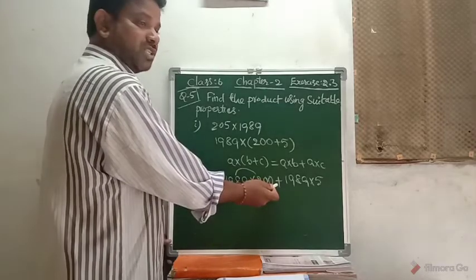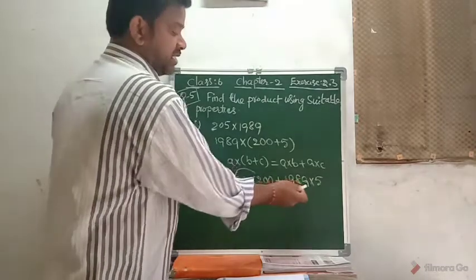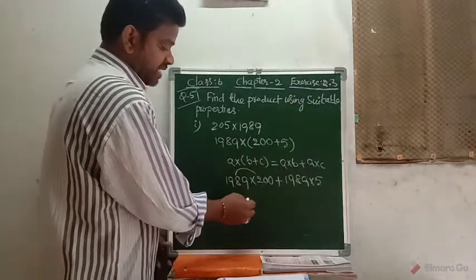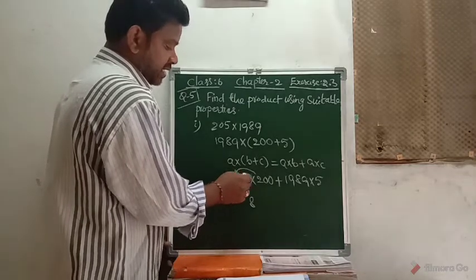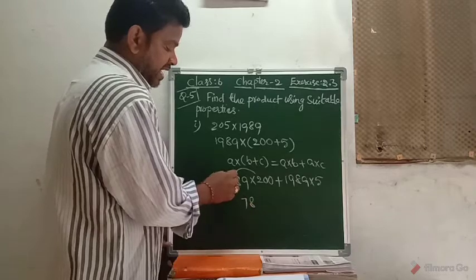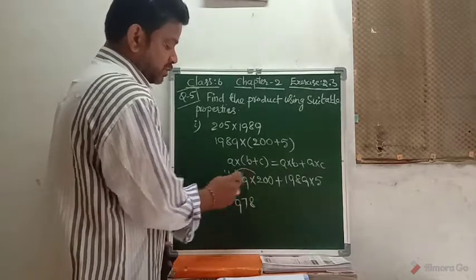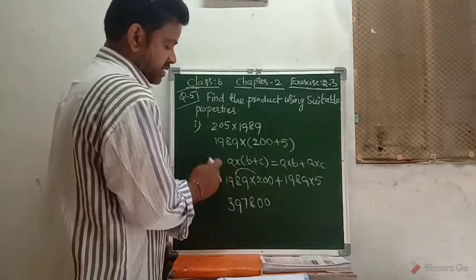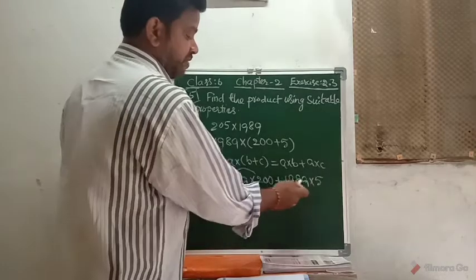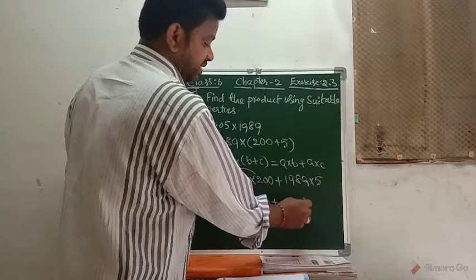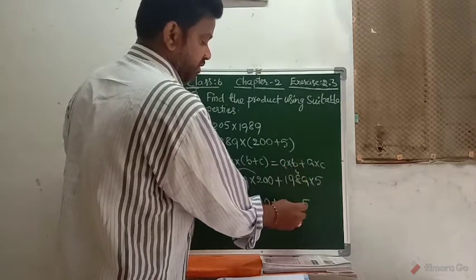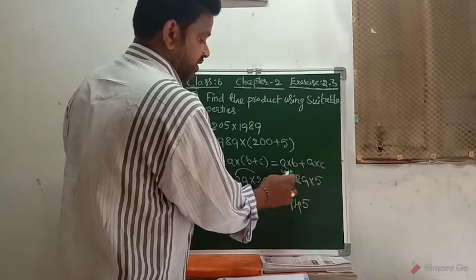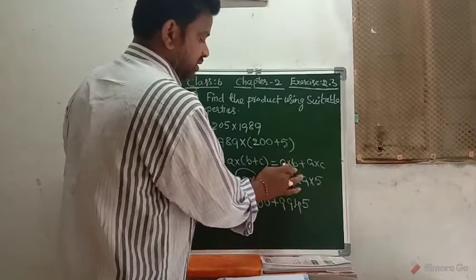Now it is very easy to multiply with 200 — just multiply by 2 and insert two zeros after the product. Then multiply 1989 by 5 and add these two numbers to get the final result. 2 times 9 is 18, carry 1; 2 times 8 is 16 plus 1 is 17, carry 1; 2 times 9 is 18 plus 1 is 19; 2 times 1 is 2 plus 1 is 3. Then 5 times 9 is 45, 5 times 8 is 40 plus 4 is 44.